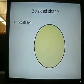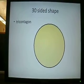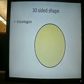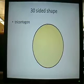Here we have a Tricontagon, a 30-sided shape, starting to look like a circle, but you can still see the edges.